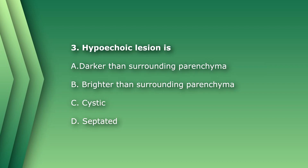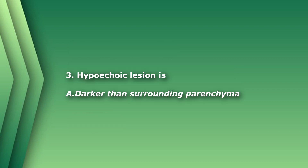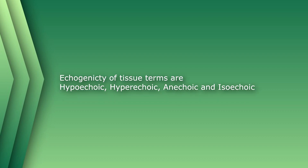Question 3: A hypoechoic lesion is A) darker than the surrounding parenchyma, B) brighter than the surrounding parenchyma, C) cystic, or D) septated. The answer is A) darker than the surrounding parenchyma. The terms for echogenicity are: hypoechoic meaning darker, hyperechoic meaning brighter, anechoic meaning lacking echoes, and isoechoic meaning about the same echogenicity as surrounding tissue.